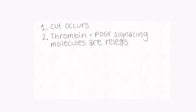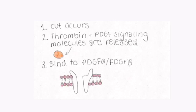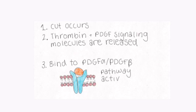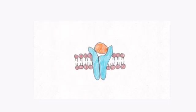To summarize: when a cut occurs, thrombin and PDGF signaling molecules are released. They bind to the PDGF alpha and PDGF beta receptors, and the pathway activates. Autophosphorylation then occurs, where ATP is converted to ADP and the phosphate groups bind to the receptors. Oxidation then occurs, where the receptors lose electrons, which initiate the signaling pathway.